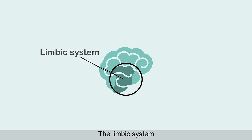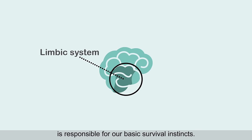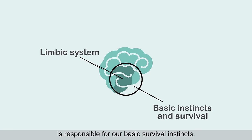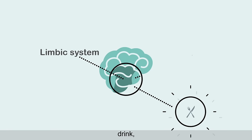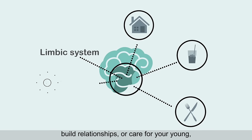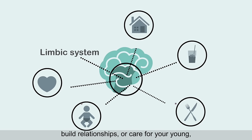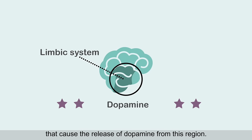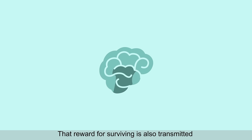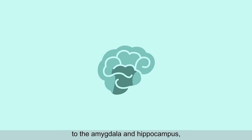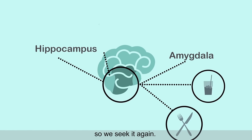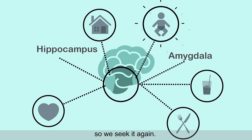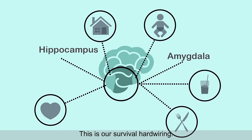The limbic system, located deep within the brain, is responsible for our basic survival instincts. So when you do essential things to stay alive — like eat, drink, find shelter, build relationships, or care for your young — your brain reinforces behaviors that cause the release of dopamine from this region. That reward for surviving is also transmitted to the amygdala and hippocampus, which records a memory of that feeling, so we seek it again. This is our survival brain.